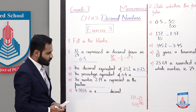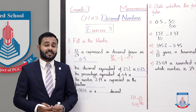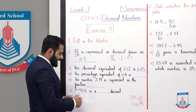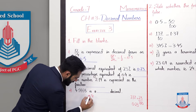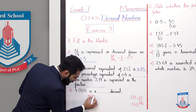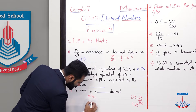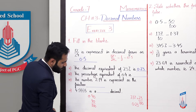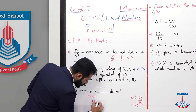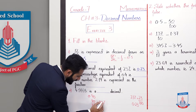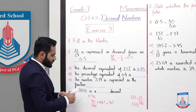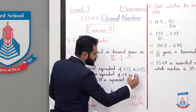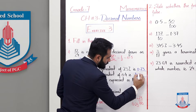The percentage equivalent of 0.4: as we studied, if the point moves two digits forward, the denominator becomes 100, which equals percentage. So we simply multiply by 100 — the 100s cancel — and the answer is 40%. So 0.4 equals 40 percent.